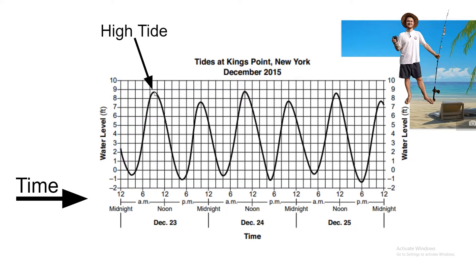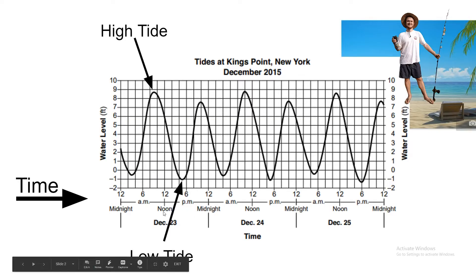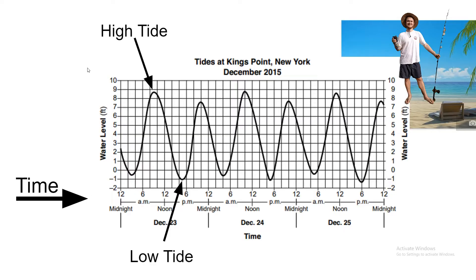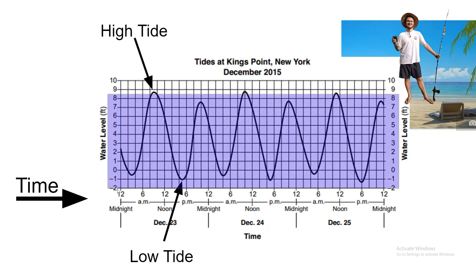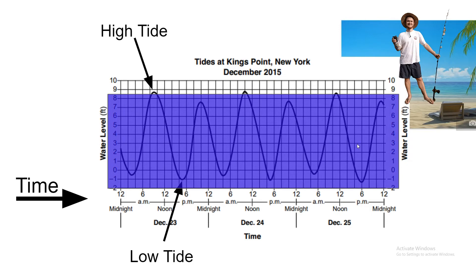Up here we have a high tide where the water level is high. Down here we have a low tide where the water level is low. Water levels are on the side here — this is the base sea level, or the average base sea level is zero. This is above sea level, and this is below sea level. Here, this will represent our water.